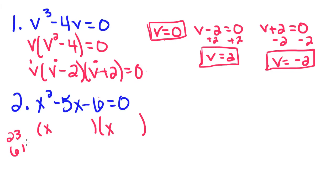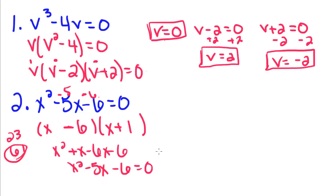It's going to be 6 and 1. Because if you take negative 6 with a positive 1, you'll get x squared plus x minus 6x minus 6, which is going to give you x squared minus 5x minus 6 equals zero.